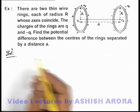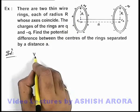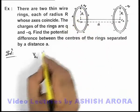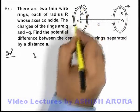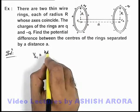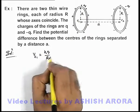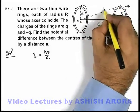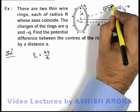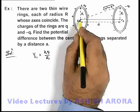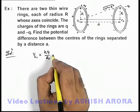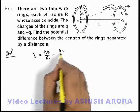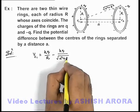Here in the solution, we can directly write down the potential at the center of the first ring, that is Vc1. It is due to its own charge; because it is at the center of the ring, its expression can be used as kq by R. And due to this negative charge, as this point C1 is located at a distance root of a² plus R² on its axis, so its potential due to minus q charge can be written as minus kq by root of a² plus R².